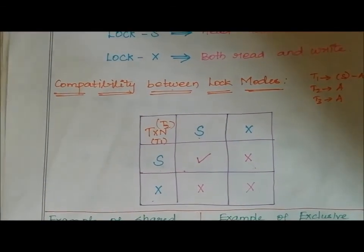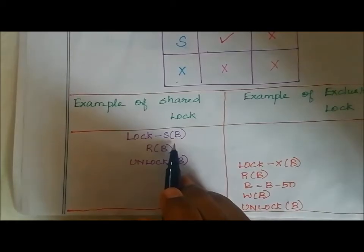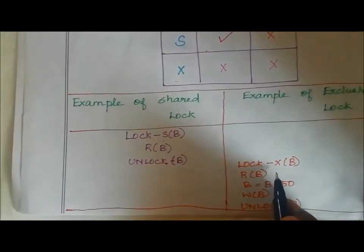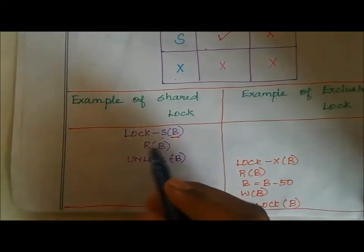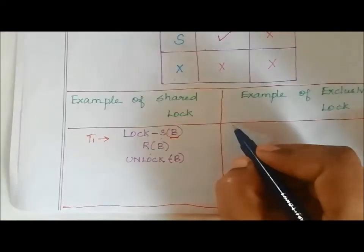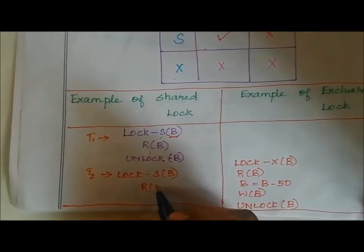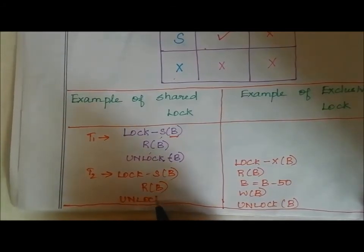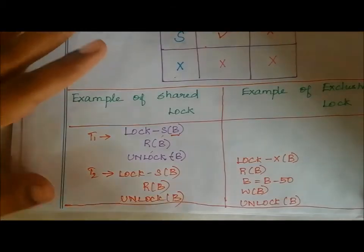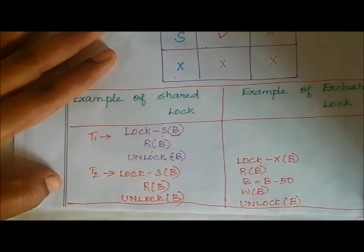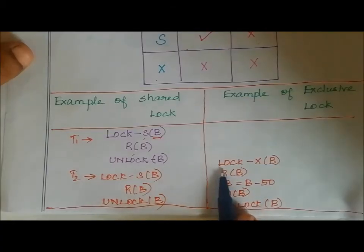For example with shared lock: transaction T1 performs Lock(S) of B, then Read of B, then Unlock of B. Any number of transactions can use a shared lock on a particular data item. For exclusive lock: Lock(X) of B — both read and write operations can be performed. So: Lock(X) of B, Read of B, modify/update the value, then Unlock of B. But only one transaction can use exclusive lock for a data item at a time.